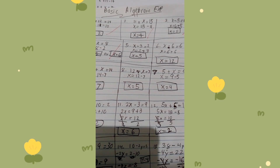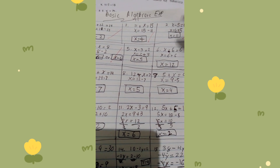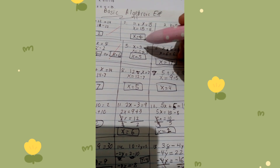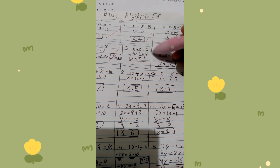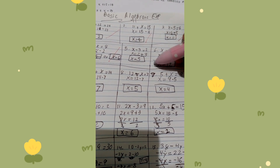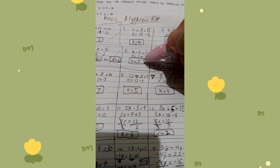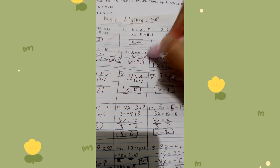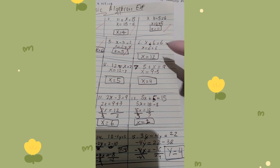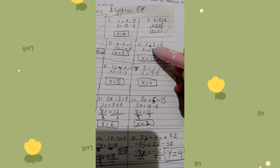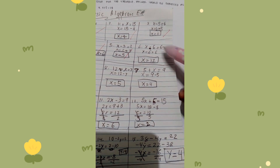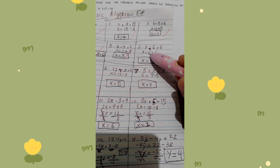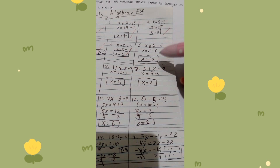Number five: x minus 3 is equal to 2. x equals 2 plus 3 — negative 3 becomes positive because we transposed it to the other side — so x equals 5. Very good. Next: x minus 6 is equal to 6, so x equals 12. Very good.